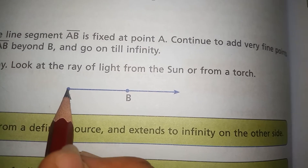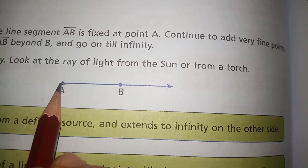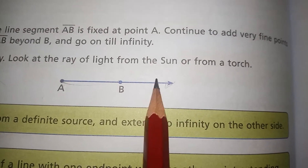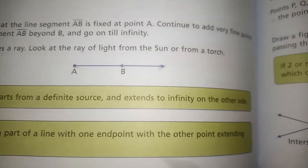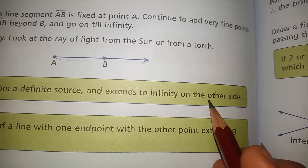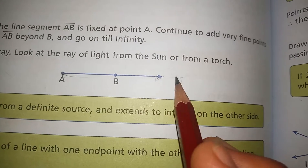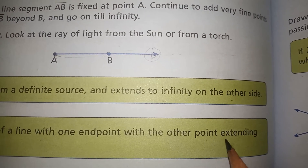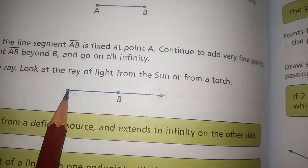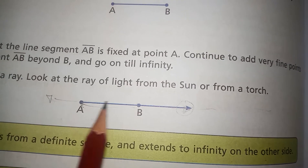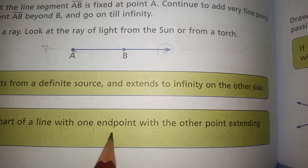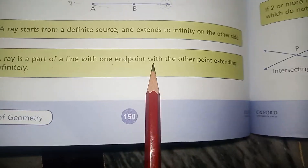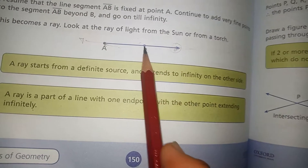A ray starts from a definite source. You can see this is a ray — AB is a line segment, but here there is an arrow sign and it can go to an infinite limit. A ray starts from a definite source and extends to infinity on the other side. It starts from point A and goes to infinity. The arrow sign means it can go to an infinite limit. A ray is a part of a line with one endpoint, with the other end extending to infinity.